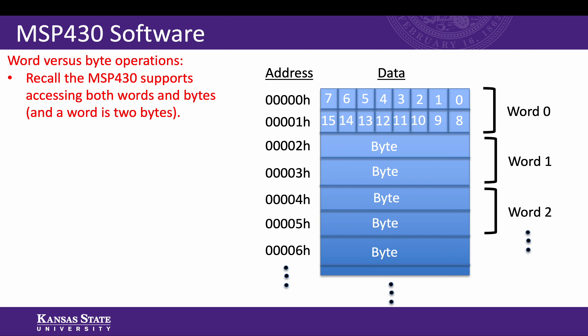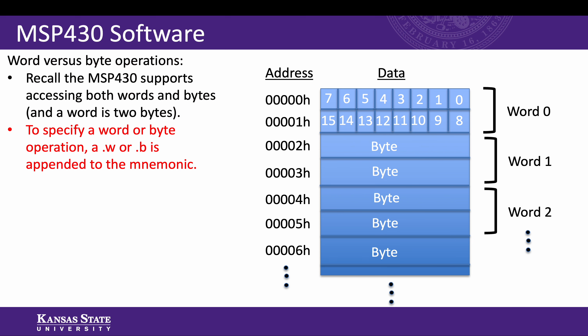The MSP430 supports both word and byte operations. Recall the address model we studied previously: a word occupies two addresses and is two bytes long. Words are accessed by even addresses, and bytes at every address. An even address is the word's least significant byte, and the odd address is the most significant. To specify an instruction as a word or byte operation, we can append .w or .b respectively to the mnemonic.